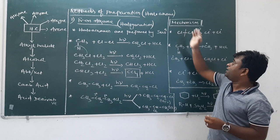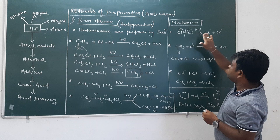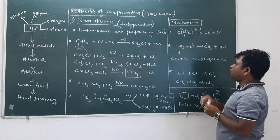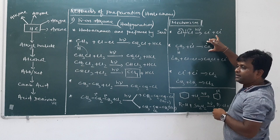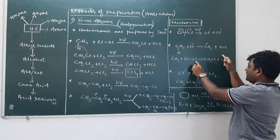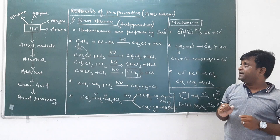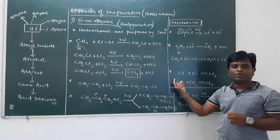Here homolytic cleavage takes place. One electron goes to one side and another electron goes to the other side, so two free radicals are generated. After generation of free radicals, it attacks CH4. The chlorine free radical combines with hydrogen, forming HCl and the methyl free radical CH3. This methyl free radical combines with another molecule of chlorine, forming CH3Cl and Cl radical. This is the propagation step where free radicals are continuously generated.